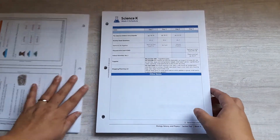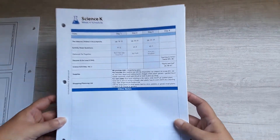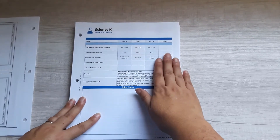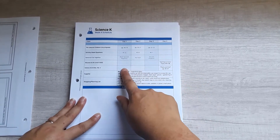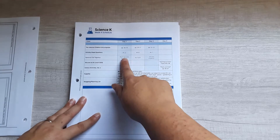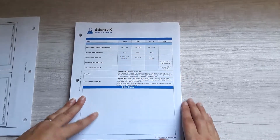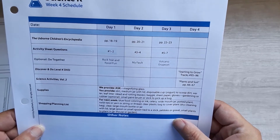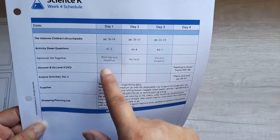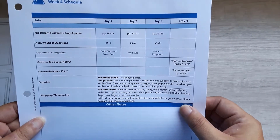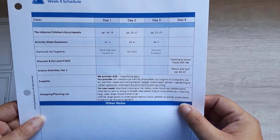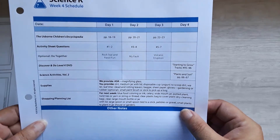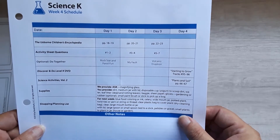Here's an example of a week of Bookshark Science. You can see it's a four-day-a-week schedule with the fourth day being a little bit different than the other three days. You can also see that it's pretty brief — there's just a couple pages of reading every day, a couple questions to answer every day, and then we've got these optional activities that we can do. I do those whenever we have time. This is the beauty of homeschool — we can do what we want.